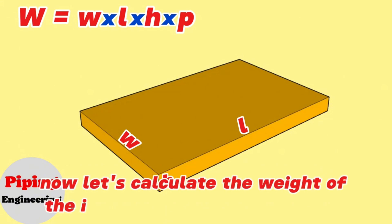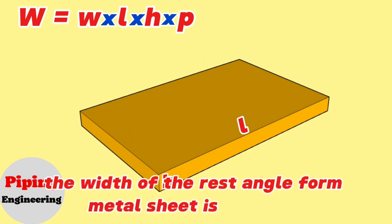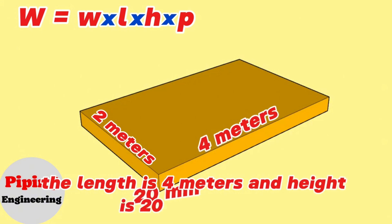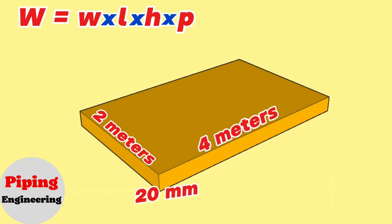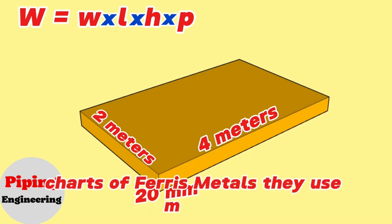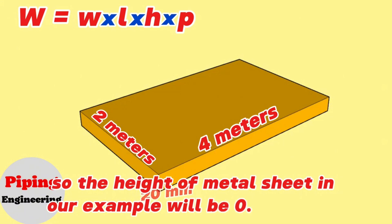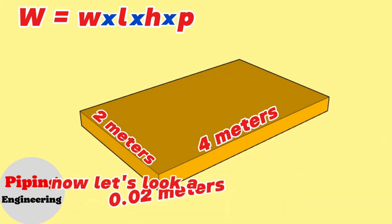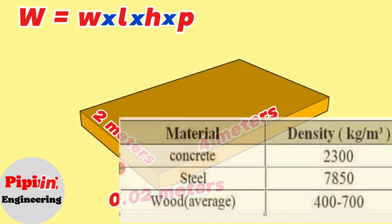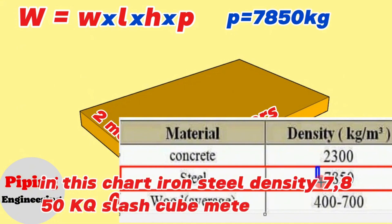Now let's calculate the weight of the iron sheet shown in the video using this formula. In our example, the width of the rectangle-form metal sheet is 2 meters, the length is 4 meters, and the height is 20 millimeters. These dimensions should be shown in meters, because in the density charts of ferrous metals they use meters. So the height of the metal sheet in our example will be 0.02 meters. Now let's look at the materials density chart to find the density of the iron material. The iron steel density of 7,850 kg per cubic meter is shown.